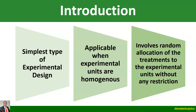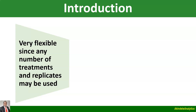CRD involves the random allocation of treatments to the experimental units without any restriction. In other words, there is no bias in its implementation. If done properly, all experimental units have equal chance of receiving any of the treatments because everything is done randomly. It is very flexible because the number of treatments and the number of replicates are as many as you want — whether you have three, four, six, or even ten treatments — so long as the experimental units are homogeneous, and you can use as many replicates as possible.